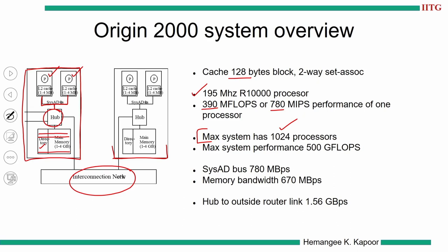With 1024 processors, you would have 512 boards connected to the network. You can imagine the scale of the system and the scale of coherence management required when applications run across many nodes sharing data. The maximum system performance is 500 GFLOPs. The SYS ADD bus — the system address and data bus — runs at 780 MB/s and is used mainly for inter-board communication. The hub, which is the main directory coherence controller module, connects to the outside router at a 1.56 Gbps link.